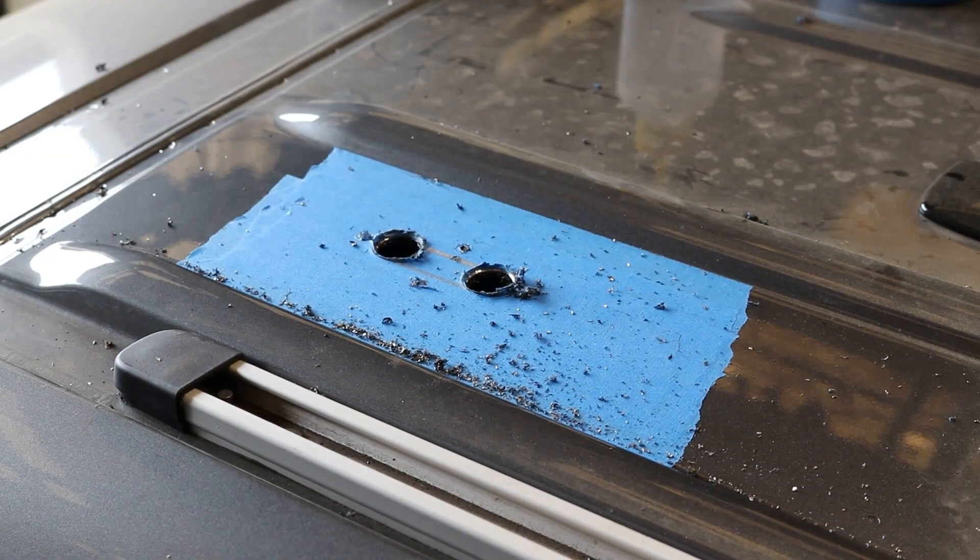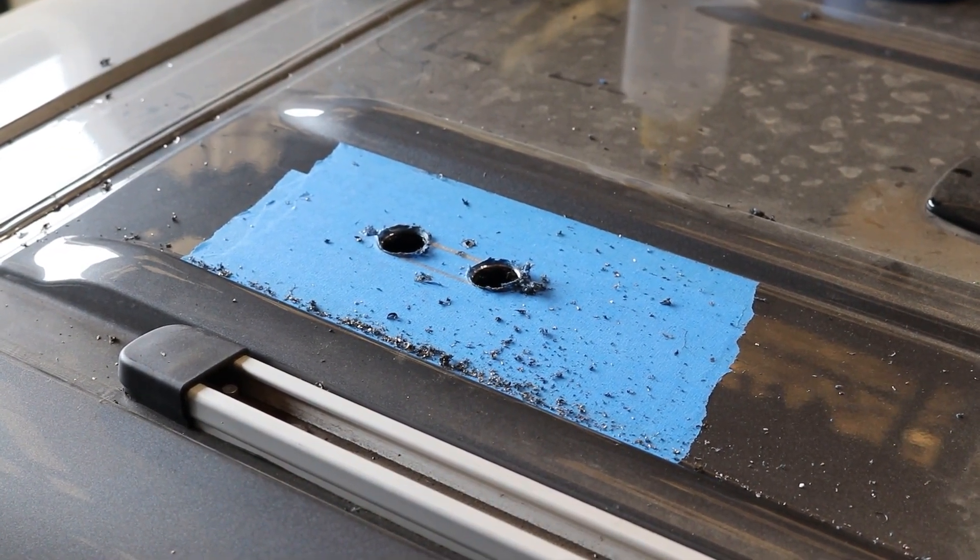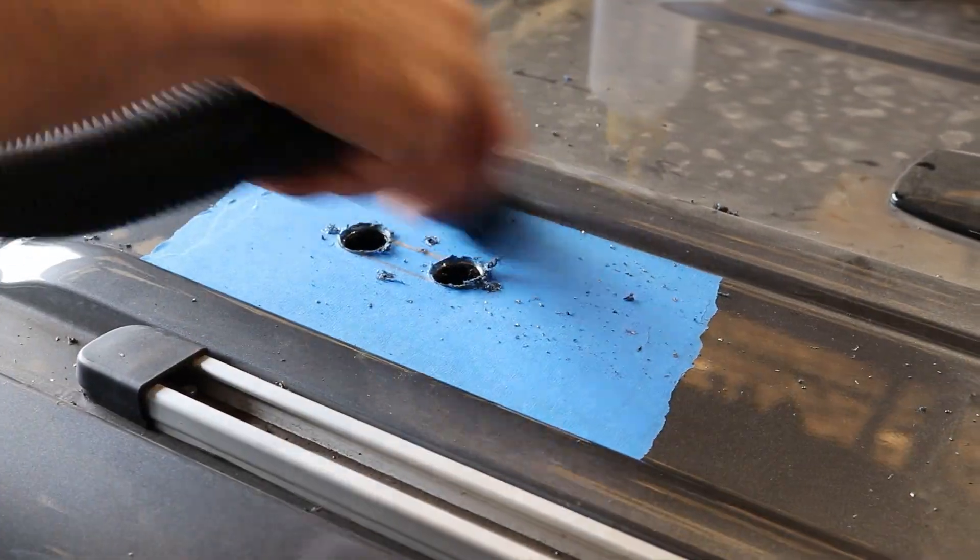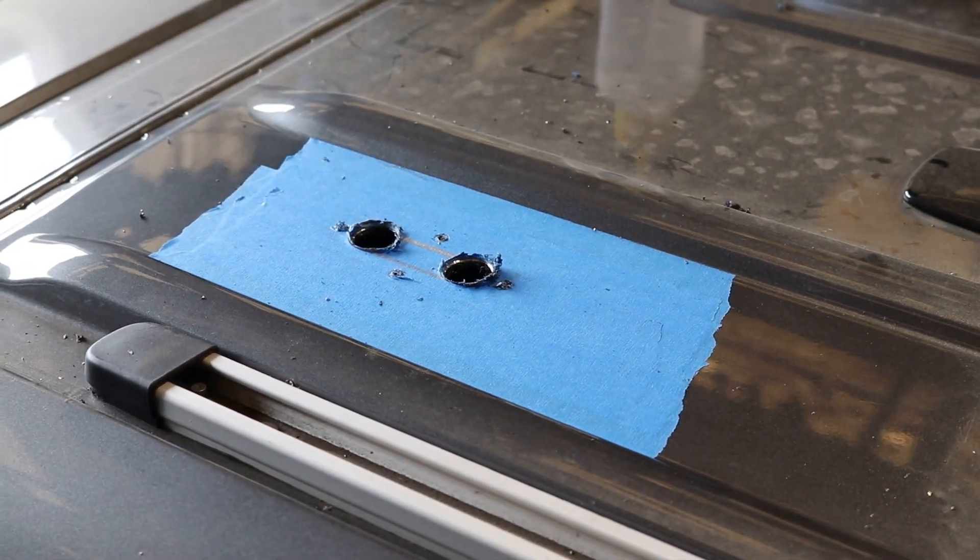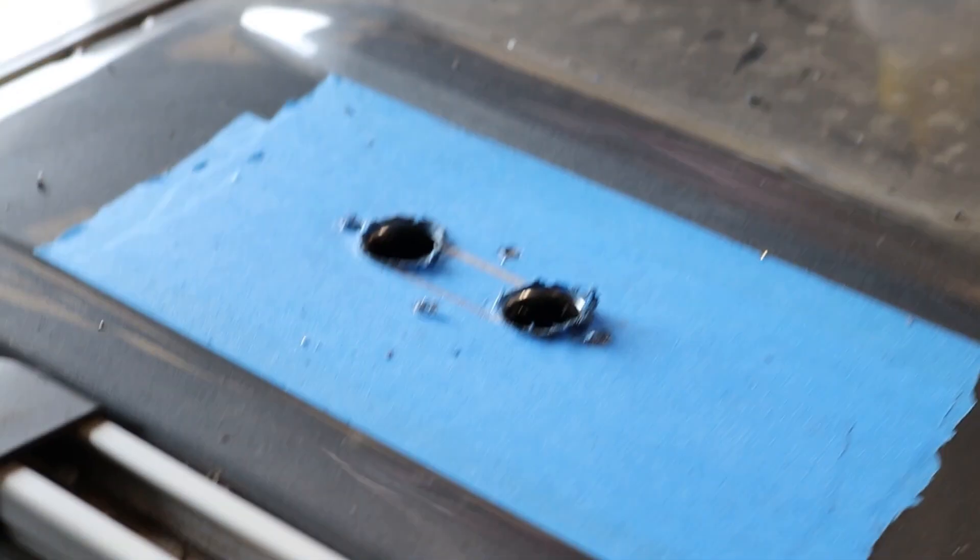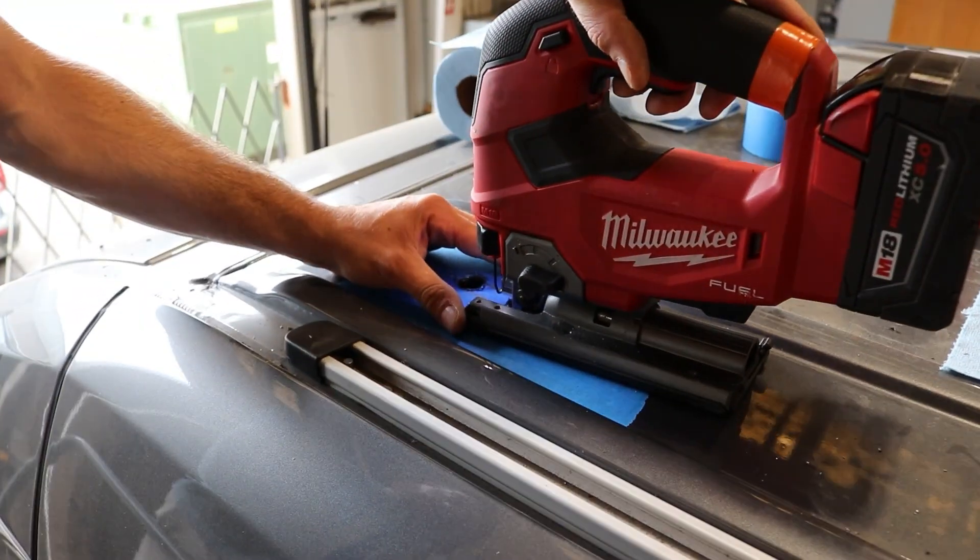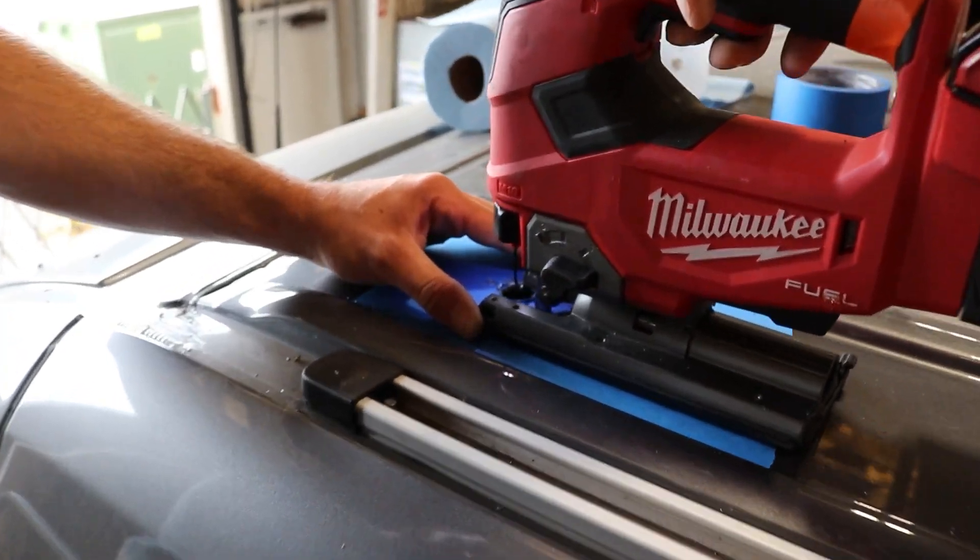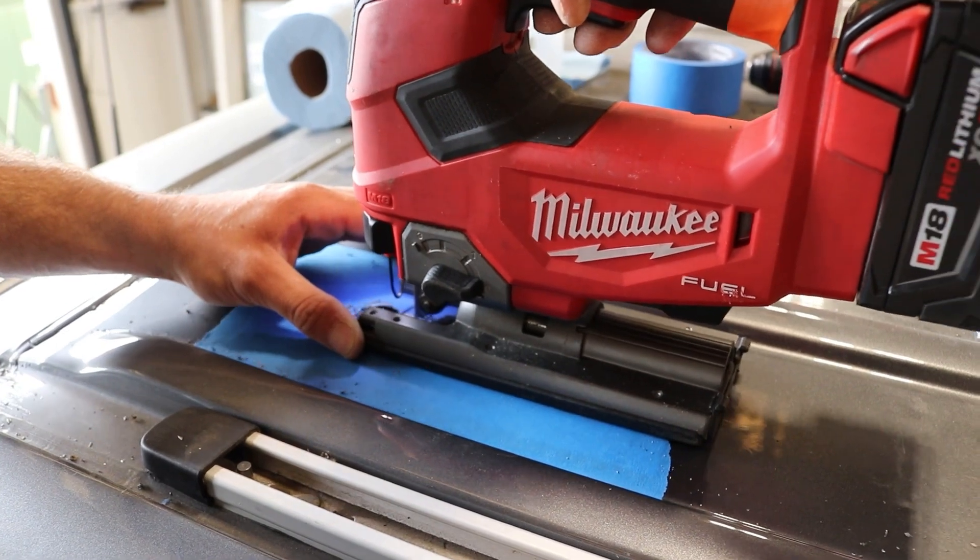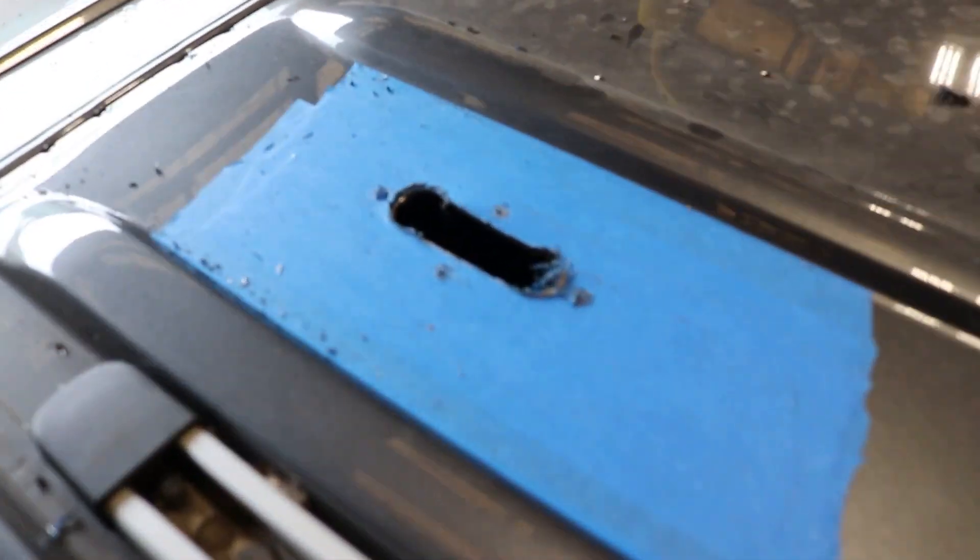If you drift over the line slightly, it's not that big of a deal. You don't want to go too far outside because then you'll get into the area that the gasket of the solar gland needs to compress on the roof. But if you stick to your line and keep it clean, you'll be fine. Now connecting those two cutouts to create the final cutout for the gland. This is where the painters tape on the roof really comes into play to protect the roof from the base of the jigsaw.